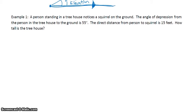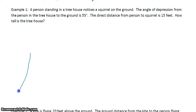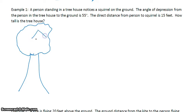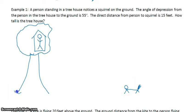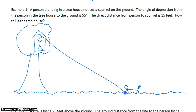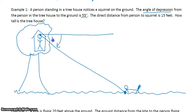Let's look at example one. A person is standing in a tree house. I'm going to draw a tree, a house in that tree, and a person standing in that tree house. The person notices a squirrel on the ground. The line of sight between that person and that squirrel is shown, and the angle of depression from the person to the ground is 55 degrees — from this person looking straight out and then down to this line of sight.